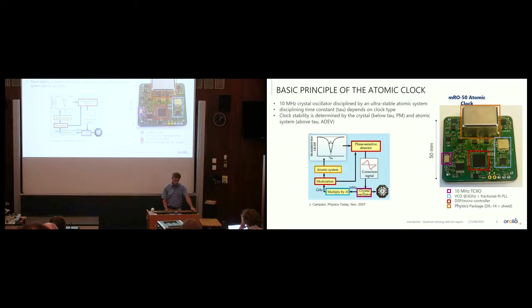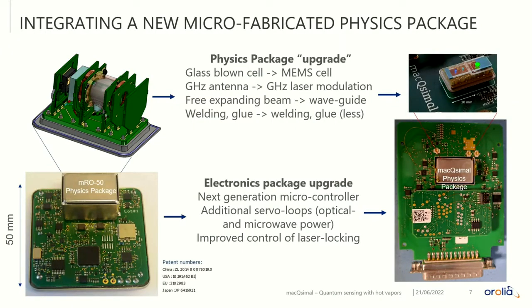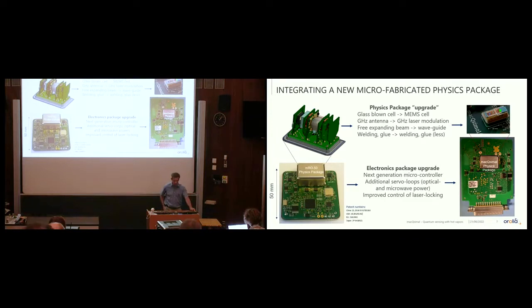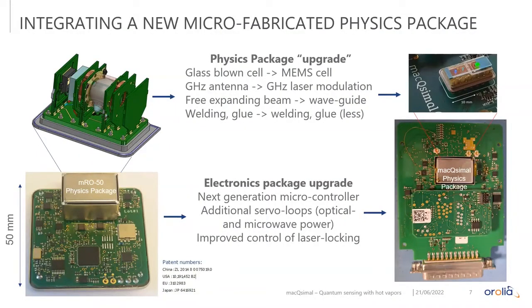Let's take a look inside the physics package, the orange box on the MRO. This is where we have done most of the work. On the PCB electronics board, this is where we've done most of the work within the Maximal project. We have done an upgrade from the left to the right, taking first the upgrade on the physics package. We use today a glass-blown cell, classical fabrication technology. A big part of the Maximal work has been on fabricating MEMS cells. One of these MEMS cells was a MEMS cell for our atomic clock, which has been integrated. We have replaced a gigahertz antenna with some gigahertz modulation of the laser. We've changed the interrogation form of the atomic clock.